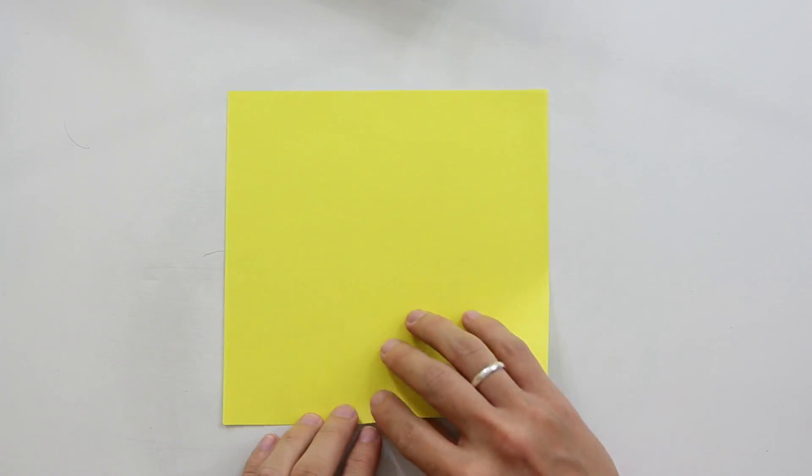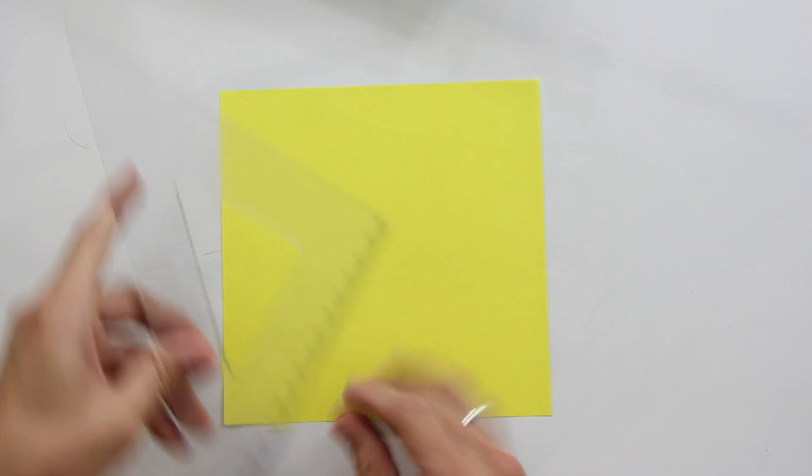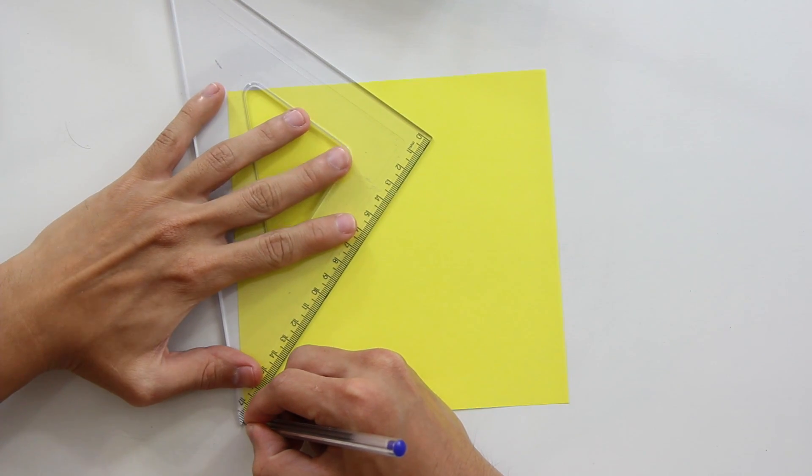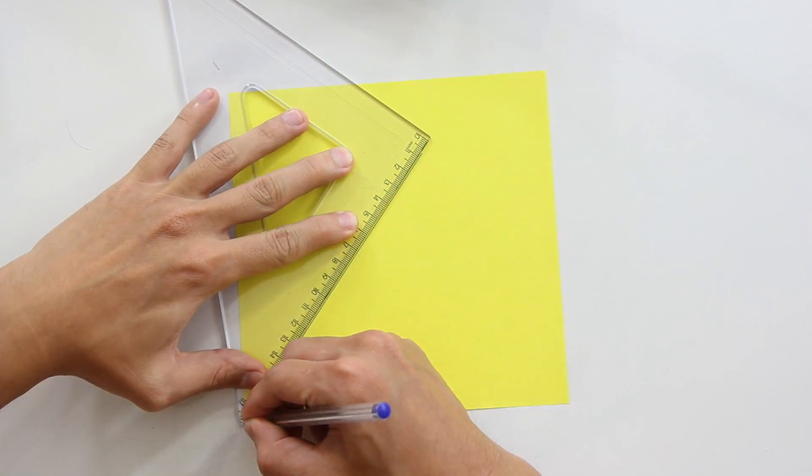Now you may ask, why are you talking about this if this is an origami channel? The reason is simple, with origami we can trisect an angle.